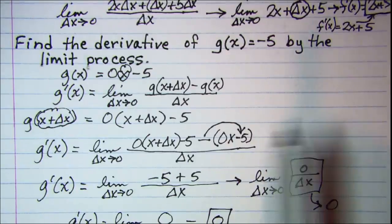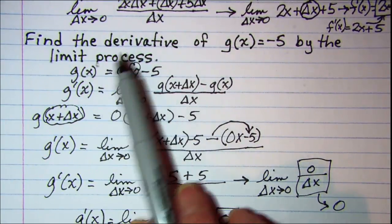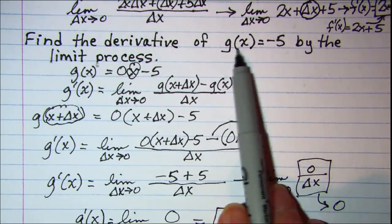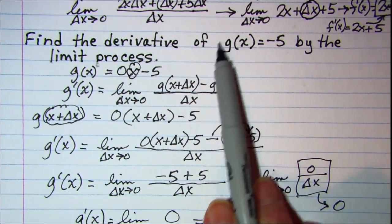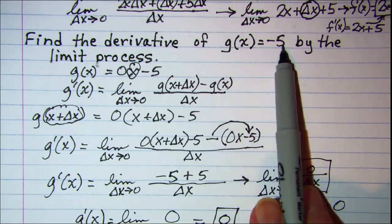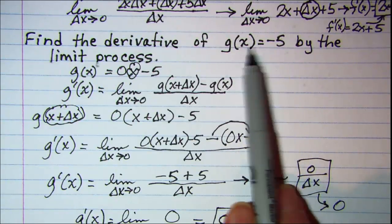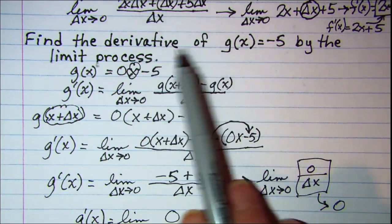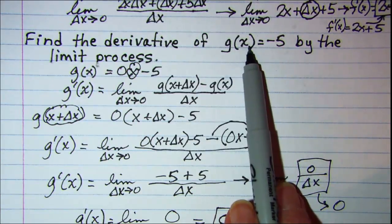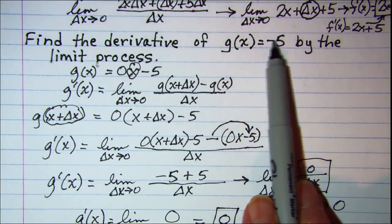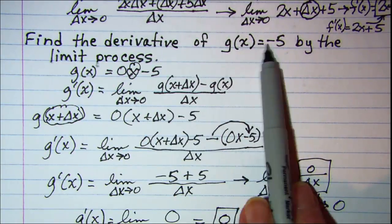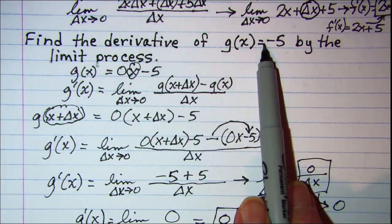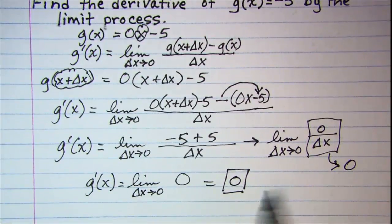Now had we not been asked to use the limit process, we could think about this conceptually. A function equal to a constant is a horizontal line through that number, so g of x equals negative 5 is a horizontal line through negative 5. Since the derivative is the slope of the tangent line, and the slope of a horizontal line is 0, it makes sense that our limit process yielded 0.